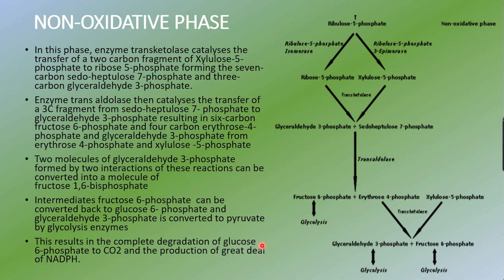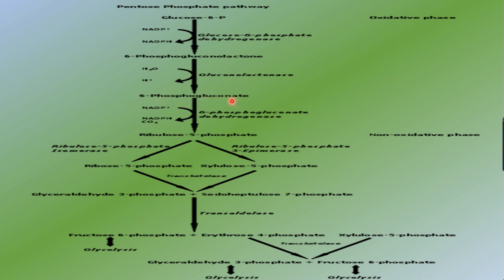This results in complete degradation of glucose-6-phosphate to carbon dioxide and the production of a great deal of NADPH. As mentioned, the HMP pathway does not produce ATP — the main product is NADPH. The overall reaction shows glucose-6-phosphate being converted to 6-phosphogluconolactone, then to 6-phosphogluconate, and then to ribulose-5-phosphate. This 5-carbon compound is then converted to ribose-5-phosphate (by isomerase) or xylulose-5-phosphate (by epimerase).